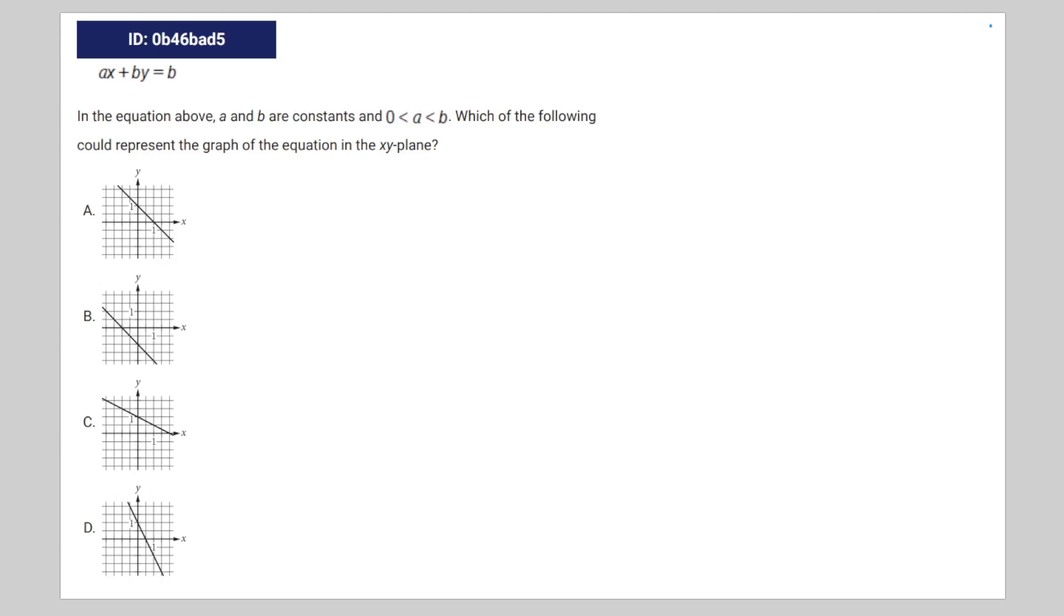So we have this algebra question. A and B are constants, and 0 is less than a, which is less than b. Which of the following could represent the graph of the equation? So we're going to want to write it in the y-intercept form, which is y equals mx plus b, where m is the slope and b is the y-intercept.